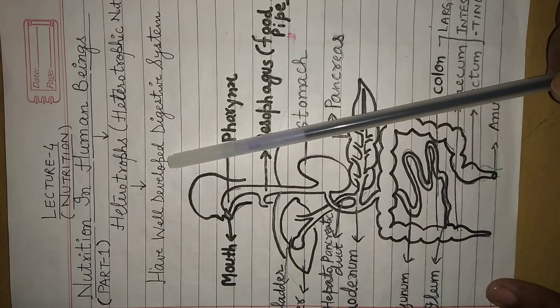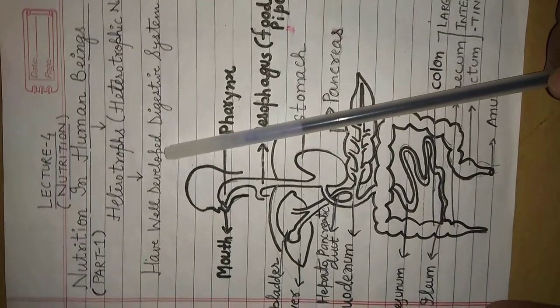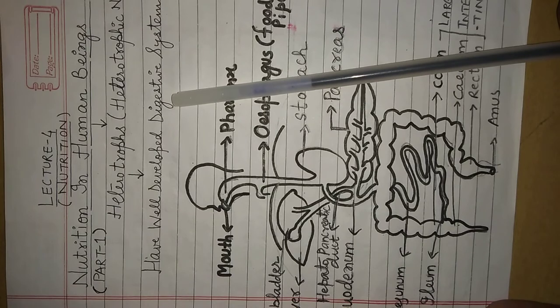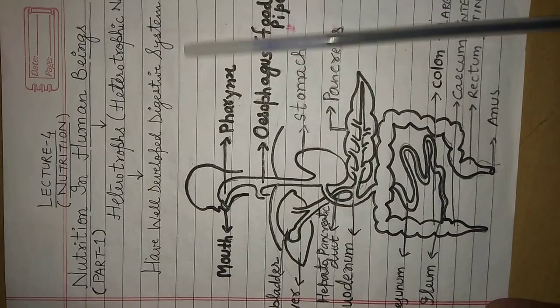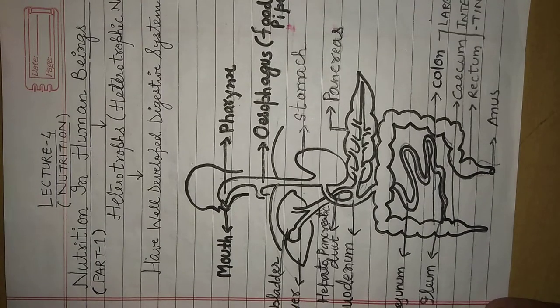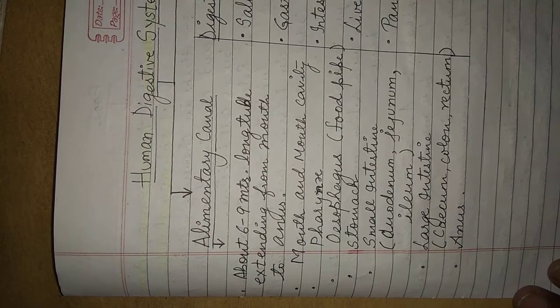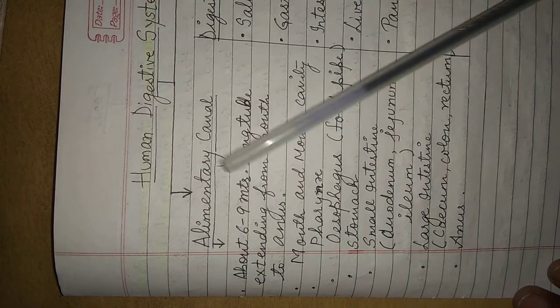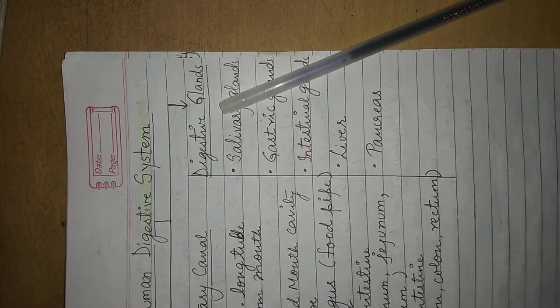To perform the process of nutrition, human beings have a well developed digestive system. Human beings ki body mein ek well developed digestive system hota hai. If we talk about the human digestive system, it is divided into two main parts: one is the alimentary canal and the other is the digestive glands.